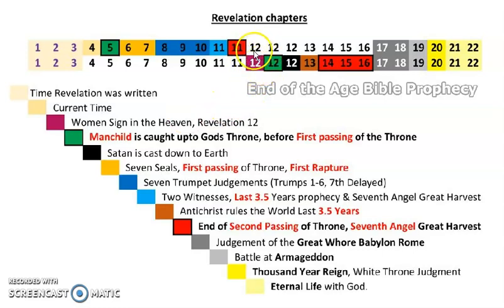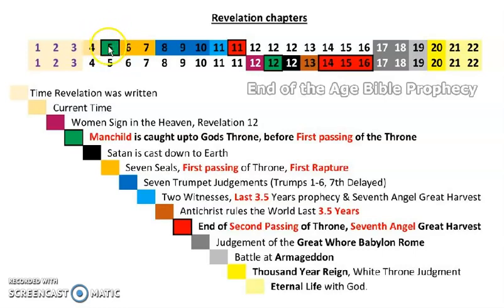The beginning of the second timeline begins in Revelation 12, where you have a great sign in the heavens — the woman clothed with the sun, moon under her feet — which actually began in 2017. This leads on to the beginning event where the man-child is caught up to God's throne, which happens just before the first passing of the throne. Revelation 12 says the man-child is caught up to God's throne; Revelation 5 says there's no one there to take the scroll with seven seals. Then suddenly the Lamb of God appears at the throne — same event. At that point, Satan is cast down to the earth and goes off to make war with Israel.